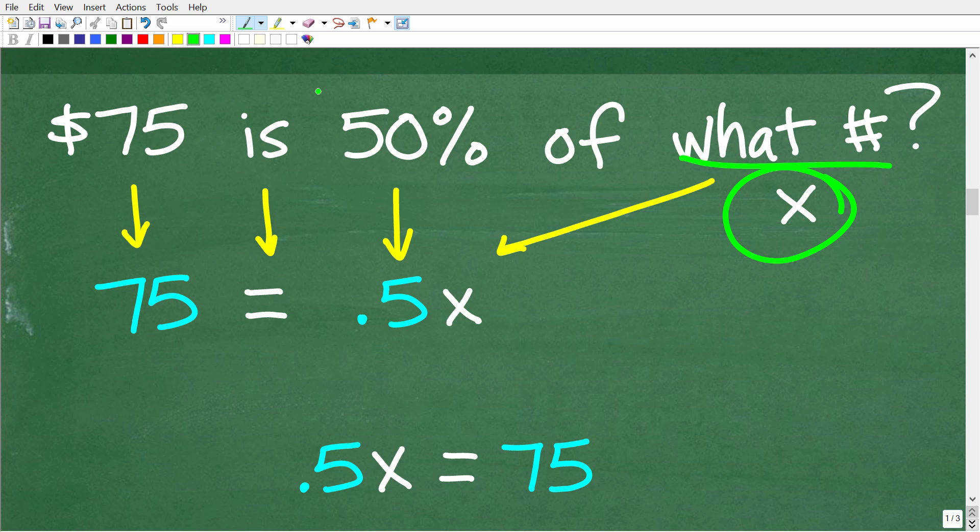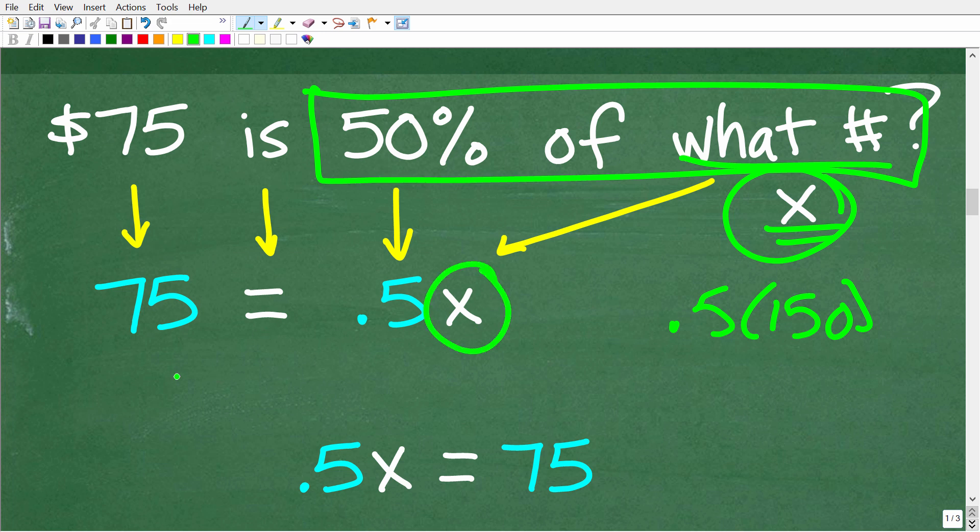50% of what number? As I just showed you, 50% of 150 is 0.5 times 150. We don't know this number, so let's call that x. 0.5 times x, 50% of this mystery number x is equal to 75. If we can solve this basic equation, 75 is equal to 0.5x, we'll get the answer.